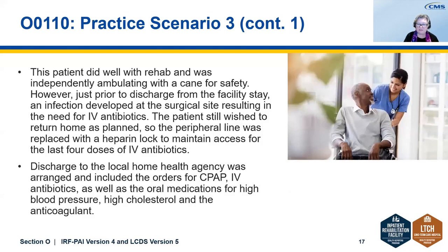Here's a continuation of scenario number three. This patient did well with rehab and was independently ambulating with a cane for safety. However, just prior to discharge from the facility, an infection developed at the surgical site resulting in a need for IV antibiotics. The patient still wished to return home as planned, so the peripheral line was replaced with a heparin lock to maintain access for the last four doses of IV antibiotics. Discharge to home with a local home health agency was arranged with orders for the CPAP, IV antibiotics, oral medications for high blood pressure, high cholesterol, and the anticoagulant.